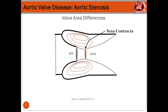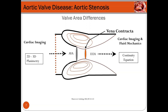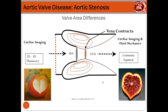It is important to see the differences between the anatomic valve area and the effective orifice area. The anatomic valve area can be measured by cardiac imaging using 2D or 3D planimetry with echocardiography or CT, reflecting the geometry and natural opening of the valve. The effective orifice area is measured using the continuity equation and gives information about the dynamic performance of the valve. They are related by a ratio — the contraction coefficient — between the effective area and the anatomic valve area.